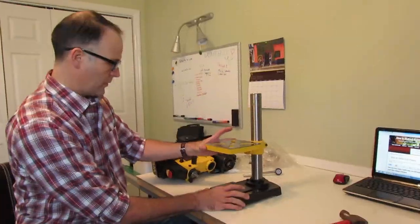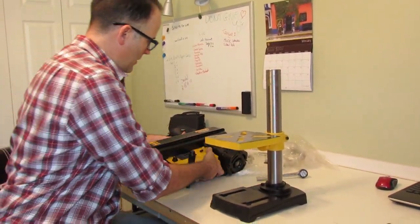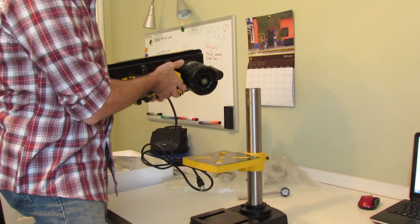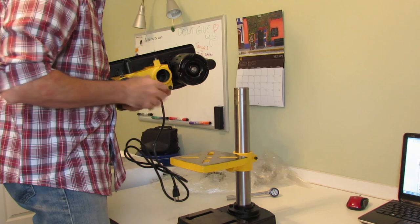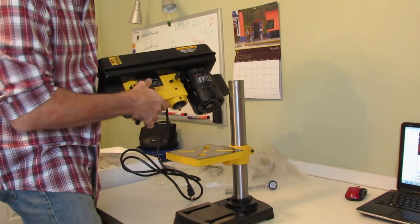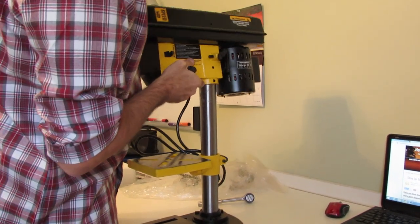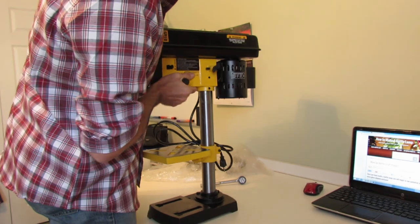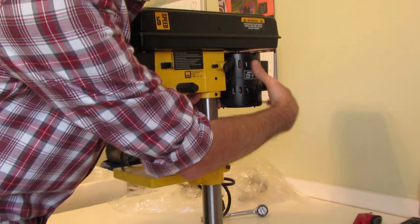Now that we've got our table on, we're ready to go with the main component. We're simply going to slide it into here and tighten it down with these two allen wrench screws on the side. There you go. It's resting all the way on now.